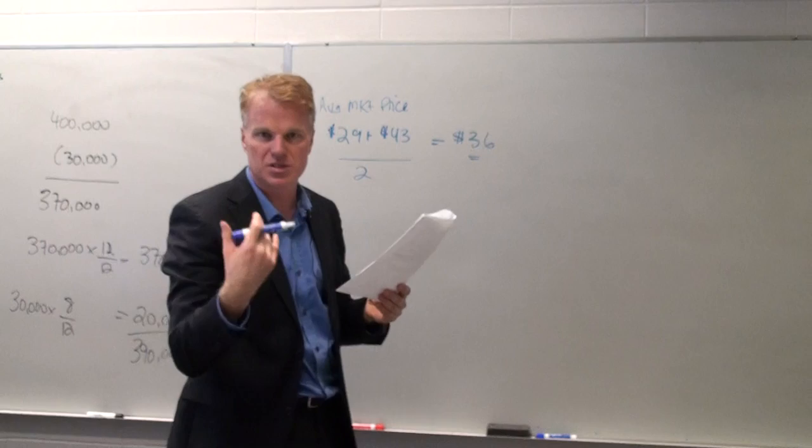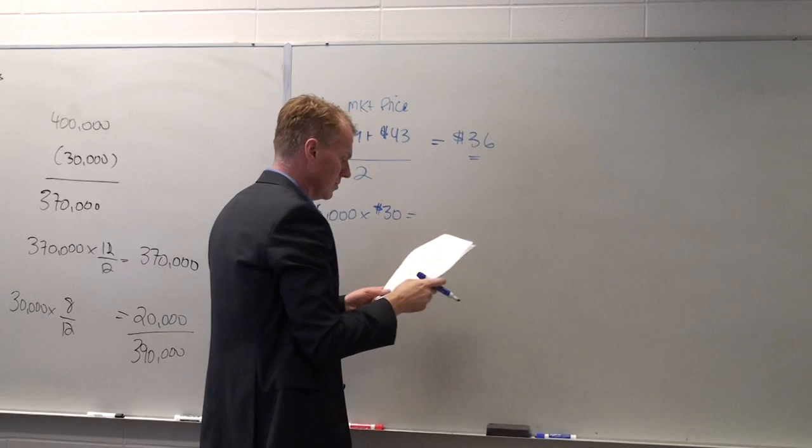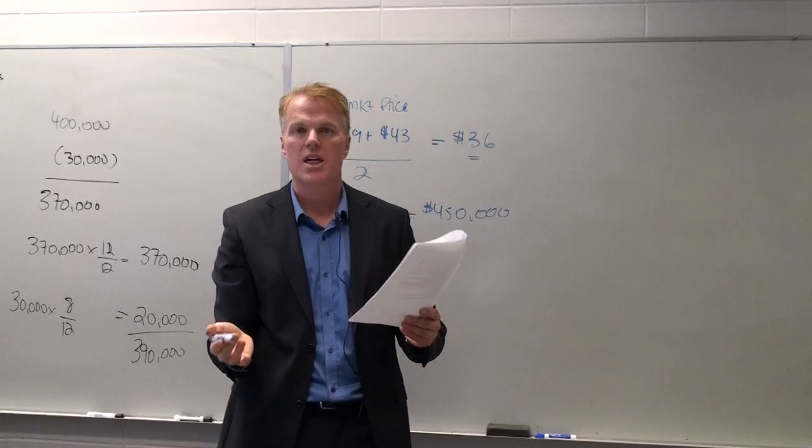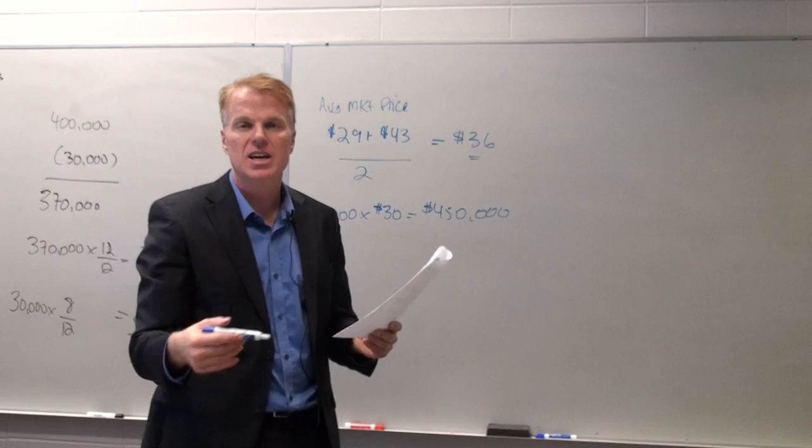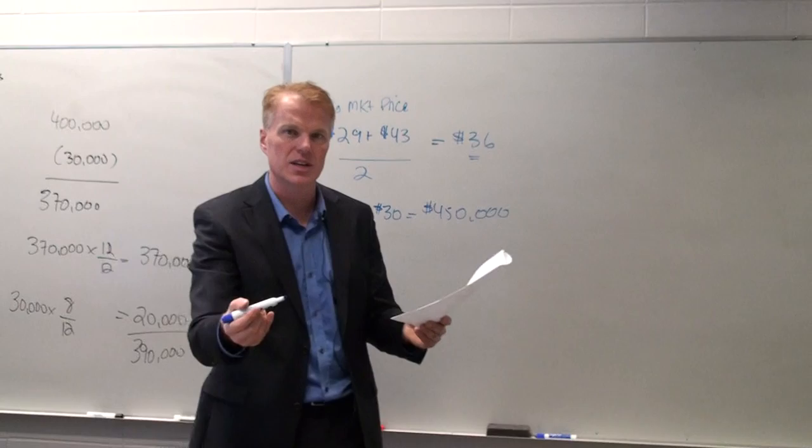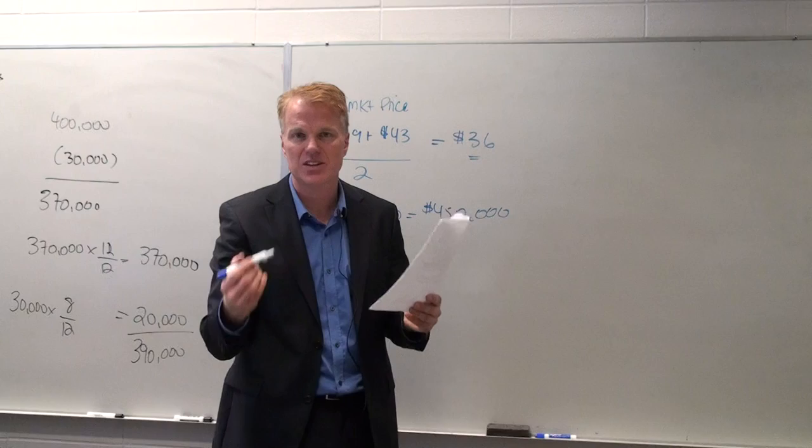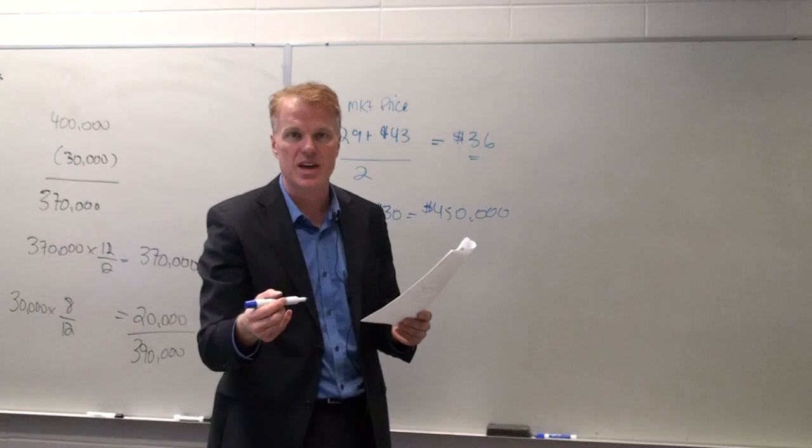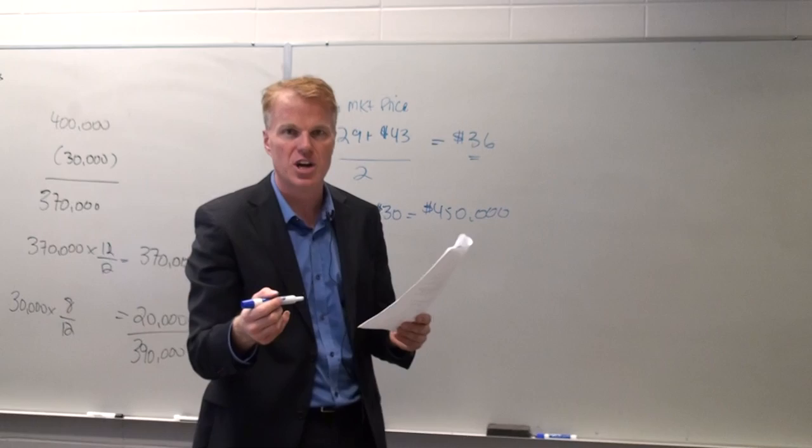So the average market price is $29 plus $43 divided by 2 equals $36. Now, what do the options say? It says that there's 15,000 options available, and they can be purchased at $30. So that means that the company would receive $450,000 if these options were exercised. Now remember, diluted EPS calculations are a what if everything was exercised, everything was converted type of calculation.